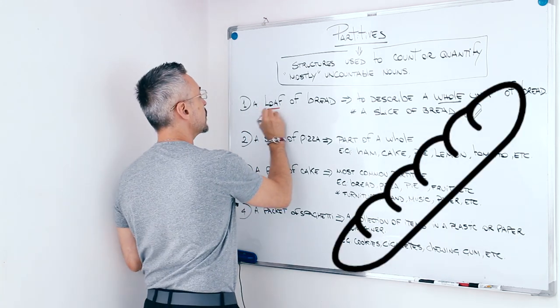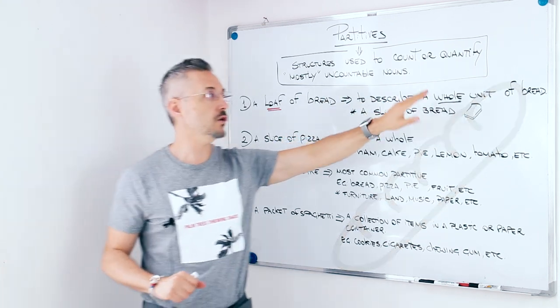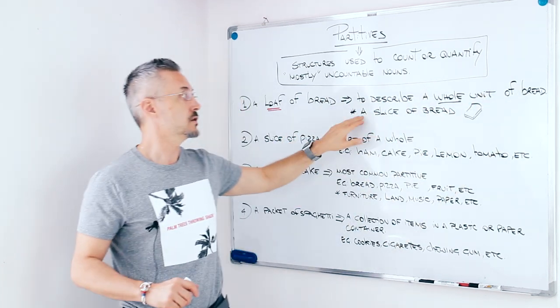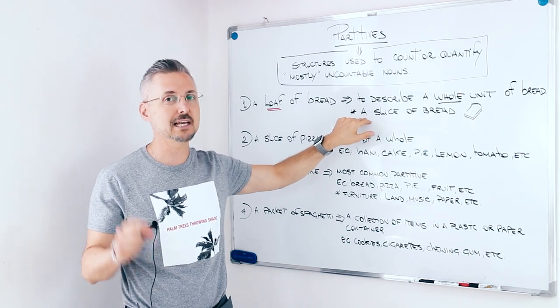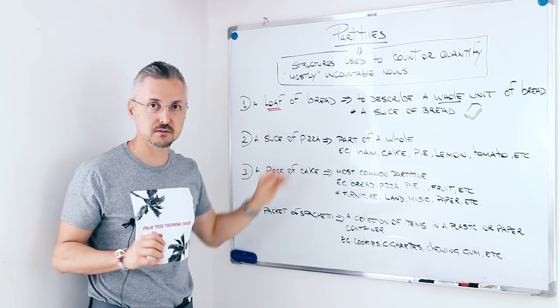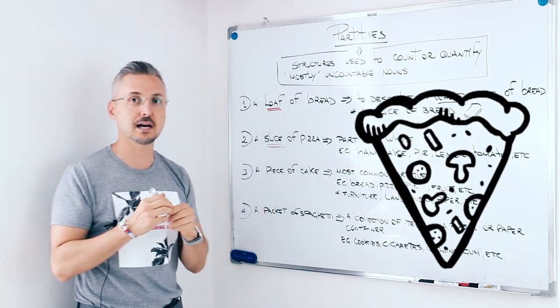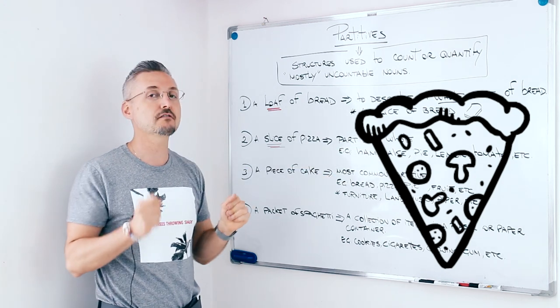A loaf of bread. This is used to describe a whole unit of bread, but we can also say a slice of bread. It's a part of bread and actually that's our second one. A slice of pizza, it's part of a whole.